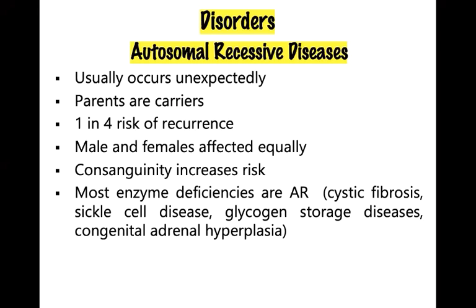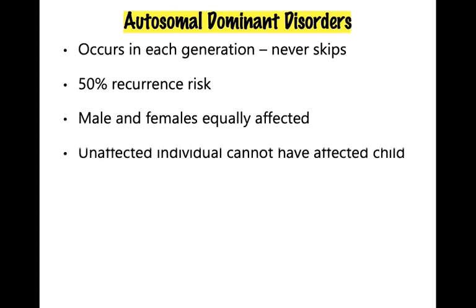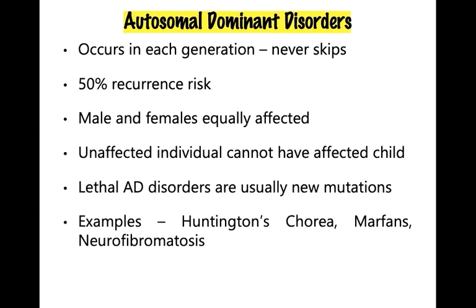Autosomal dominant disorders occur in each generation — they do not skip. There is a 50 percent recurrence risk, and males and females are equally affected. Examples include Huntington's chorea and neurofibromatosis. Unaffected individuals cannot have affected children, and lethal disorders are usually the result of a new mutation.